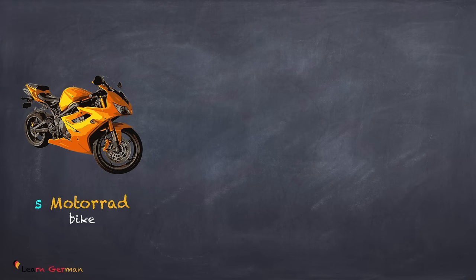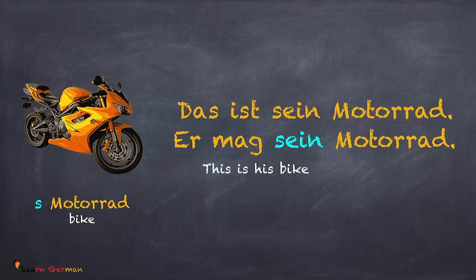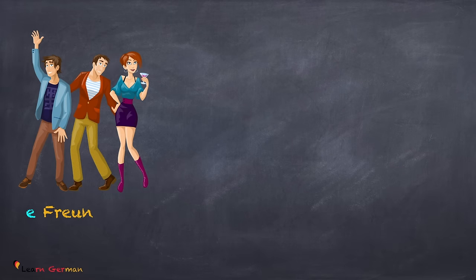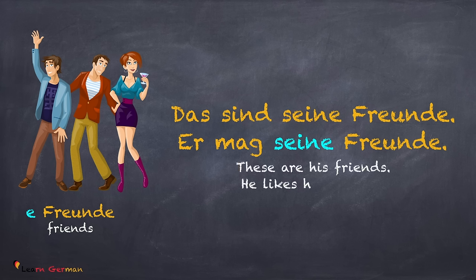And what happens when the Akkusativobjekt is neutral? Das ist sein Motorrad. Er mag sein Motorrad. In this case, sein remains sein. The Akkusativobjekt in plural is the same as that of feminine. Das sind seine Freunde. Er mag seine Freunde. Seine remains seine.